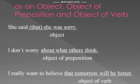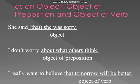'I don't worry about what others think.' Here 'what others think' is a noun clause used as an object of preposition. It is a dependent clause depending on the main clause 'I don't worry' to complete its meaning, but here it is functioning as an object of the preposition 'about.'